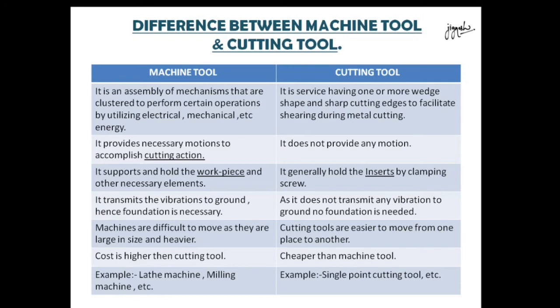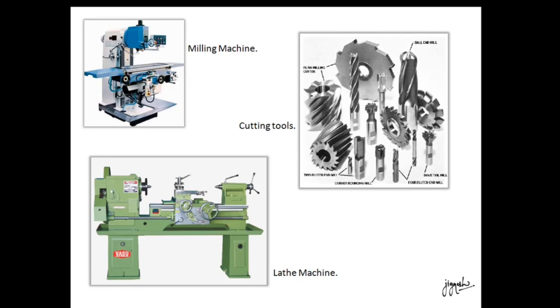Examples are: for machine tools — lathe machine, milling machine; and for cutting tools — single point cutting tool, etc. Some are shown in the figures: lathe machines, milling machines, and cutting tools listed for different machines. Thank you.